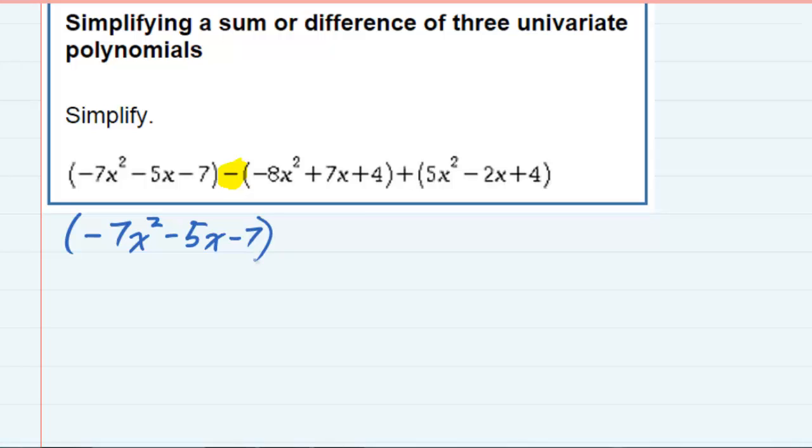But that subtraction, I can turn it into addition. That just means I need to change all the signs behind it so that that would become a positive eight x squared, a minus seven x, and then a minus four. Basically what we just did is we distributed that negative to everything in the parentheses behind it.